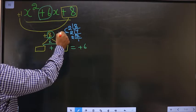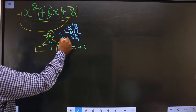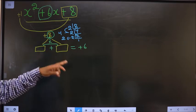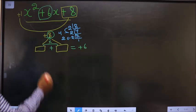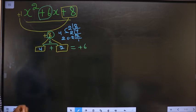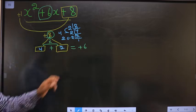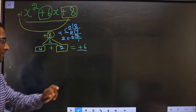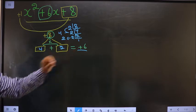4 plus 2 is 6, 4 into 2 is 8. So here 4, here 2. Now adjust the signs. I should get +6 here, so 4 plus 2 is +6.